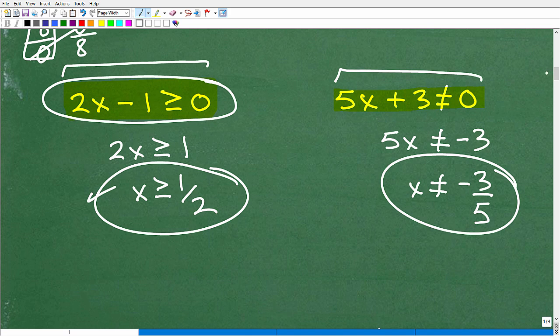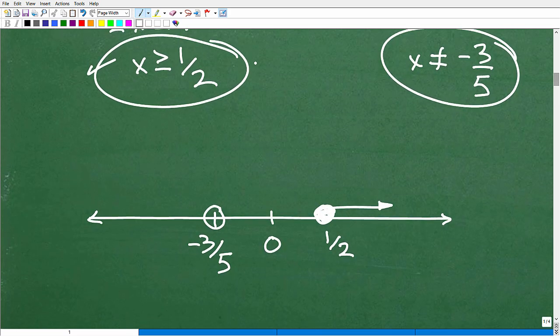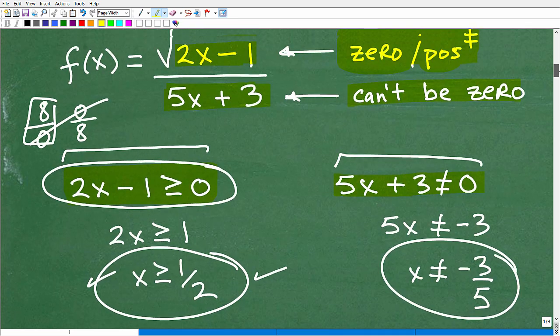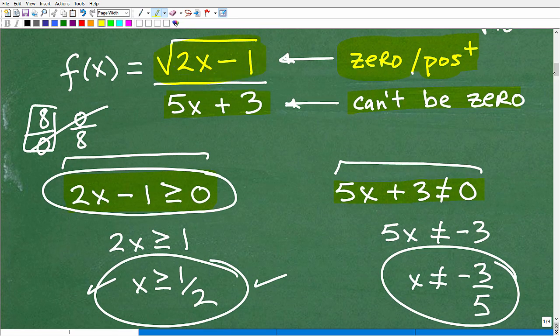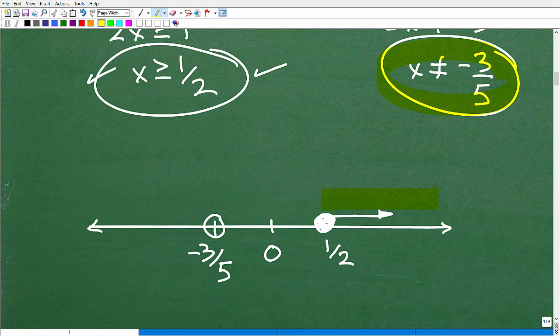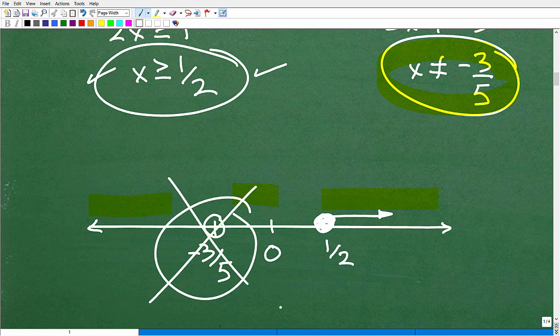So these are our two restrictions here that are going to tell us what the domain can be. This is going to give us our guidelines on what allowable numbers can go into this function. So the best way to do this is to look at this on the number line. So we have all the x's that are greater than or equal to 1 half. This is fine. That satisfies the square root restriction. In other words, this part of the function, this 2x minus 1, as long as we plug in any x's that are greater than or equal to positive 1 half, we'll be okay. And down in the denominator, as long as we don't have negative 3 fifths, we won't get a 0. So any of these numbers would be okay, or anything along the number line except for negative 3 fifths.